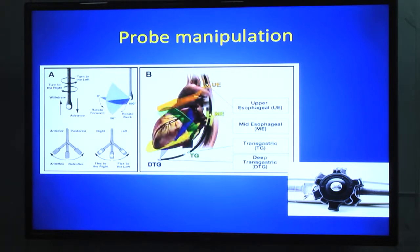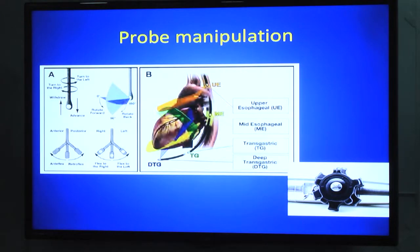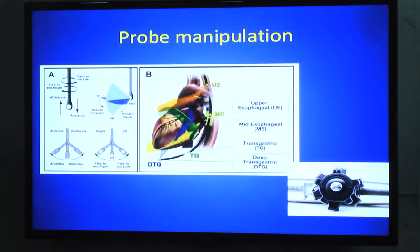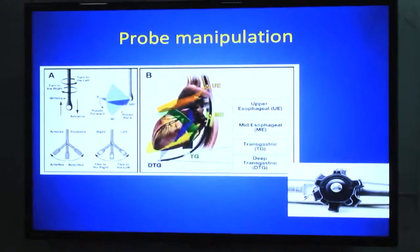If you turn the small wheel clockwise, it produces rightward flexion. Counter-clockwise rotation produces leftward flexion. All images are visualized at three levels: the upper esophageal level, mid-esophageal level, and transgastric level. These three levels are used for visualizing all 28 views.